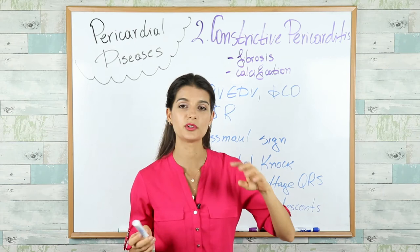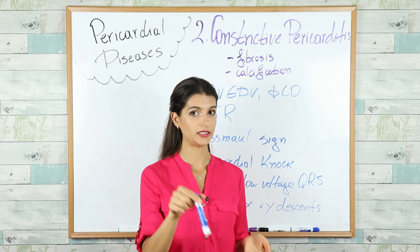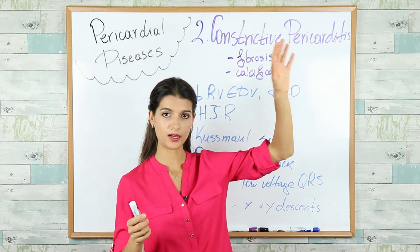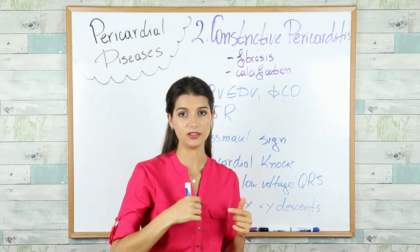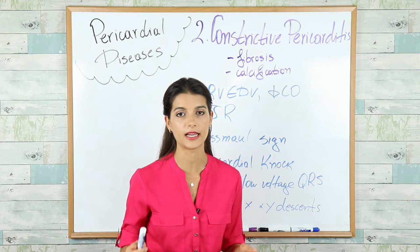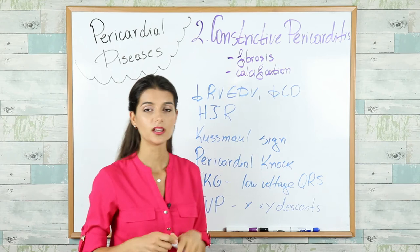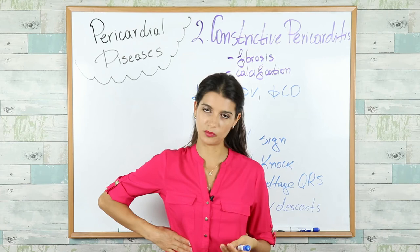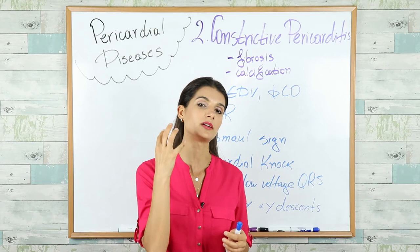When blood backs up into the right atrium and vena cava because it cannot enter the right ventricle, it leads to edema, fluid overload, and ascites. You'll also see hepatojugular reflux — when you press on the right side over the liver, the jugular veins will engorge because there is fluid overload that cannot drain into the heart.